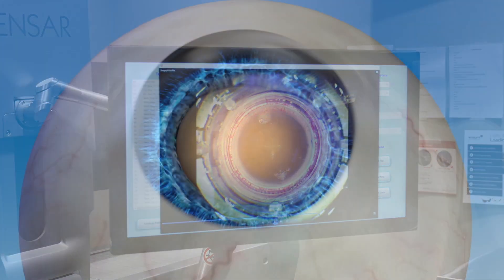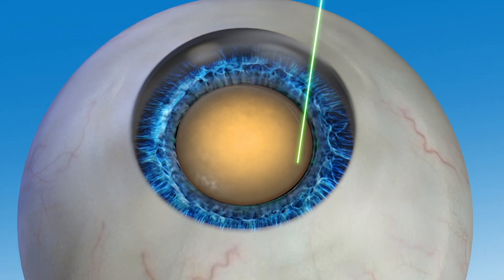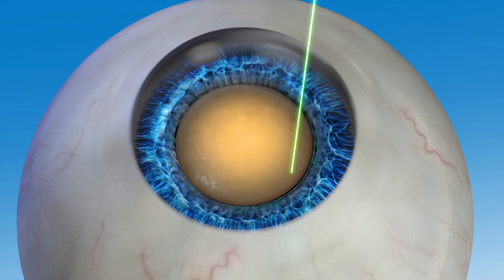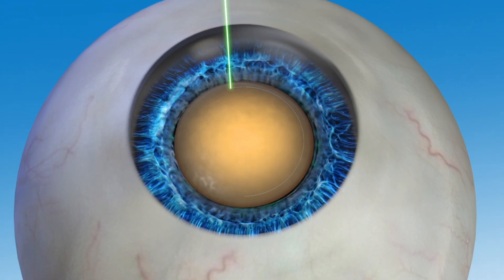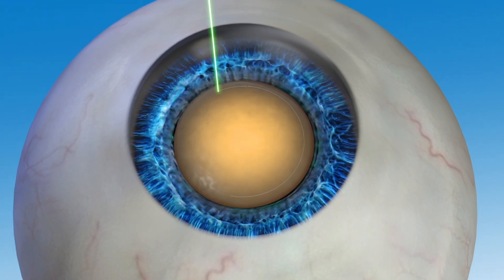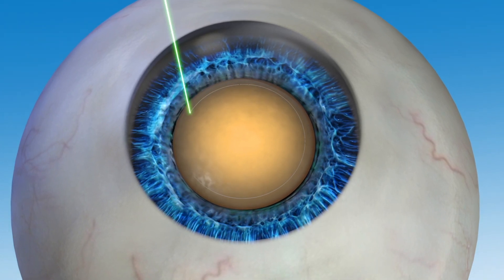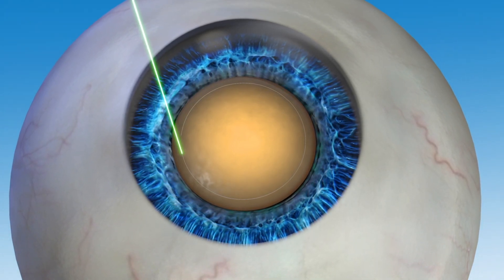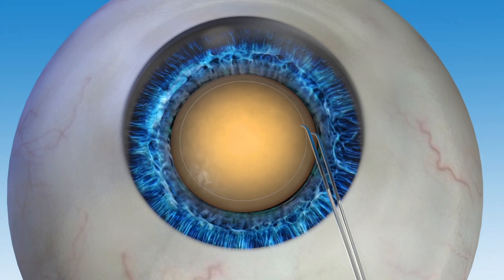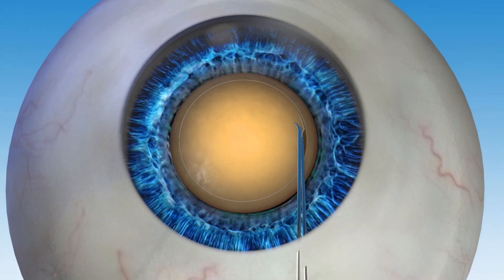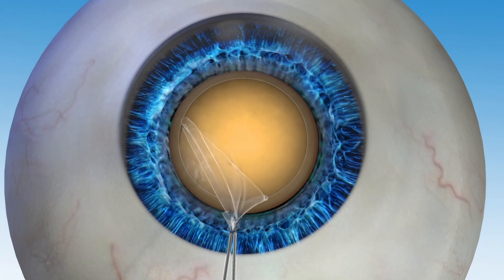With Ally Laser Cataract Surgery, the capsule opening is created first. Guided by Ally's detailed image, the surgeon accurately places the laser spots in a circular pattern to create the opening. Because the laser allows for such accuracy during the capsular opening, positioning of the new IOL can be optimized, which may lead to an improved visual outcome.